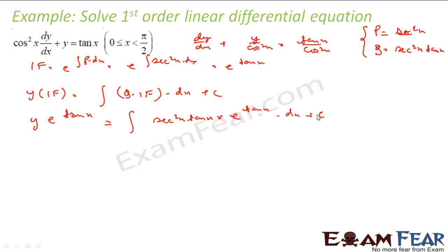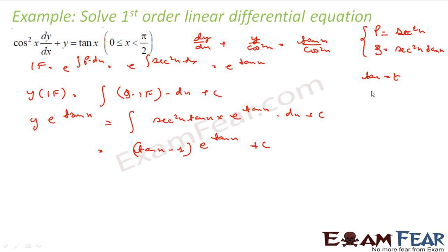Here you can take tan x equal to t. Then sec²x dx becomes dt, and the integral becomes the integration of t times e to the power t dt. If you solve this you get (tan x minus 1) times e to the power tan x. Not that difficult — you just put tan x equal to t, sec²x dx becomes dt, so you get t times e to the power t, which you can solve very easily.